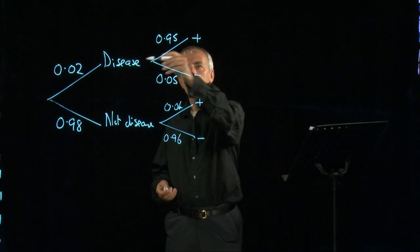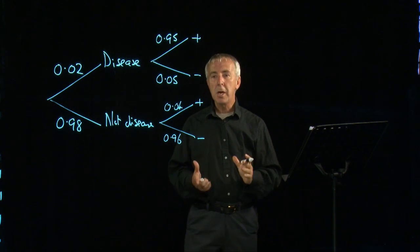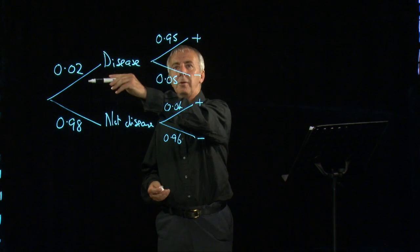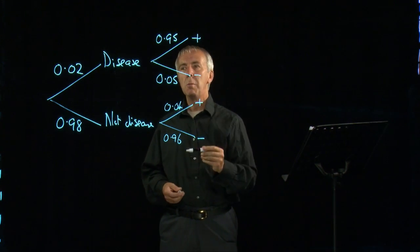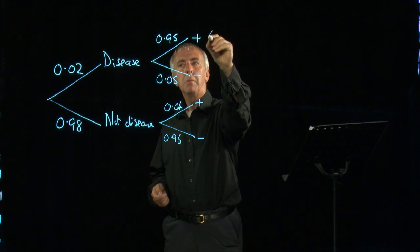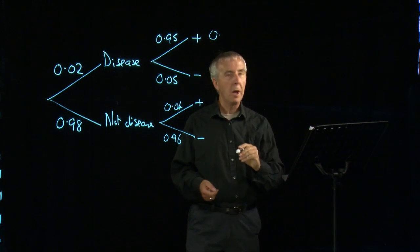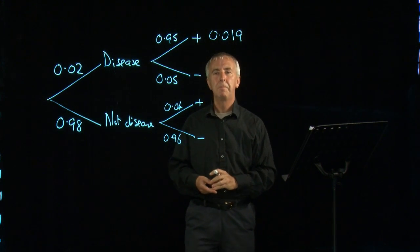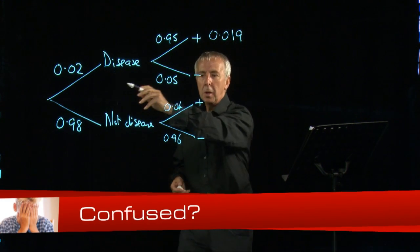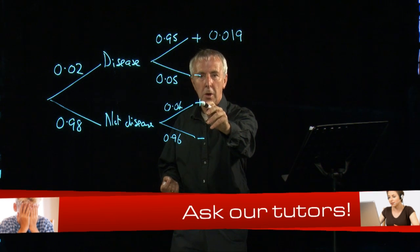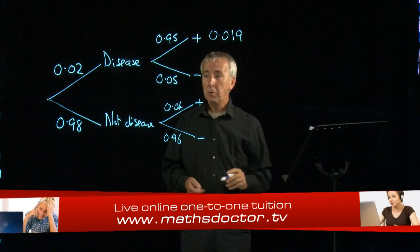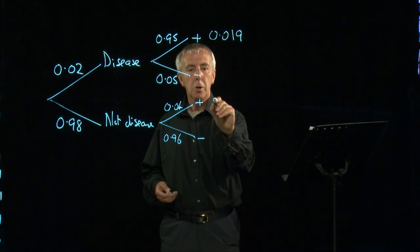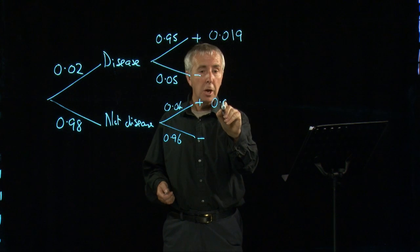As before, we can now multiply along the branches. And we're going to be mainly interested in people who have a positive result from the test. So that's the top branch. If we multiply along there, 0.02 times 0.95 comes to 0.019. And along this branch, which produces positive results for the test, multiplying together 0.98 times 0.04 gives us 0.0392.